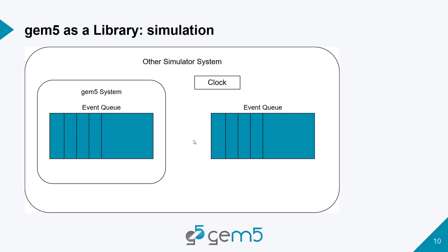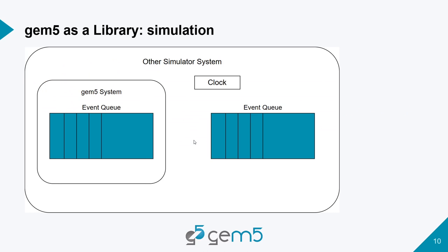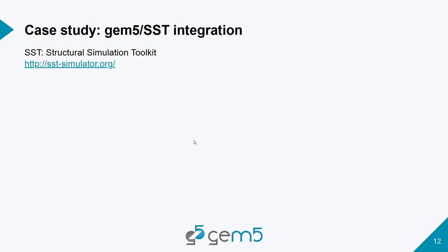Another complication is that both SST and GEM5 have two different event queues. GEM5 has its own event queue and SST has its event queue — actually SST has a bunch of distributed event queues, and then there's a clock between them. Since GEM5 is the sub-component in SST, GEM5 will tell SST, 'I have something I need to do at some particular time, will you wake me up?' Then SST calls in and wakes up GEM5 at that time, GEM5 executes some events on its queue, and once ready for the next clock tick, it tells SST it needs to be woken up again in the future.